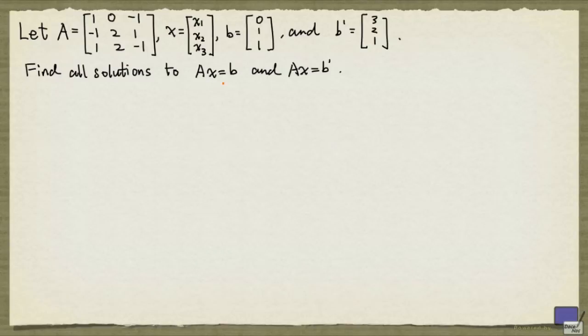We want to find all the solutions to Ax equal to b, as well as Ax equal to b'. In other words, we are trying to solve pretty much the same system, but with different right-hand side values.